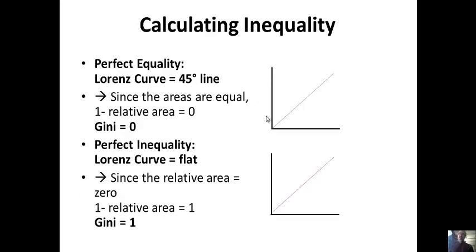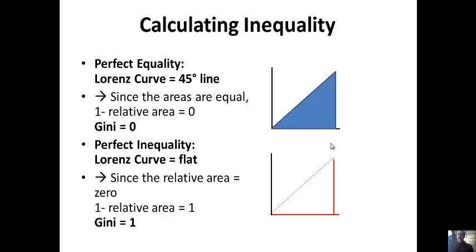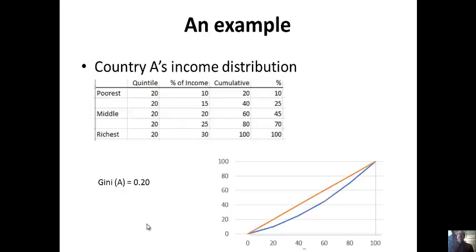Under perfect equality, you start with a 45-degree line — simply y equals x in algebra. So 20% of people get 20%, 40% get 40%, 80% get 80%, 100% get 100% — you wind up with just this 45-degree line. The area underneath is the whole triangle, 100%, so 1 minus 1 is 0. That's a Gini of 0. Perfect inequality means nobody gets anything until the last person gets everything. That area we drew has no area — it's 0% — so 1 minus 0 is 1. That's a Gini of 1, or 100. Somewhere between 0 and 1 is reality.